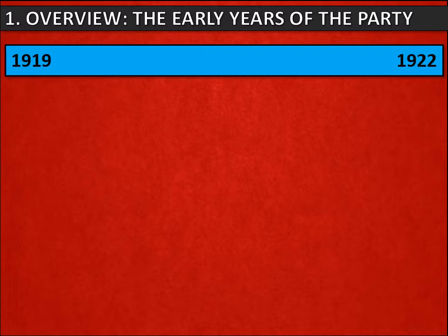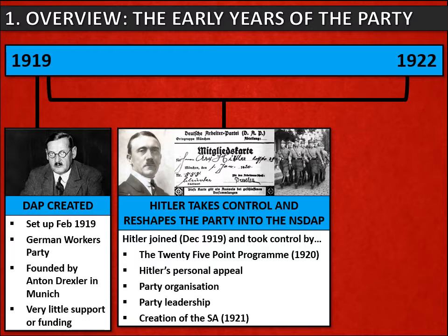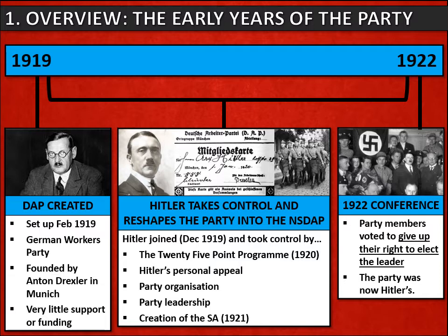The party was set up in February 1919, called the DAP or German Workers' Party, and it wasn't created by Hitler — it was founded by Anton Drexler in Bavaria, Munich. In those early days the party was almost irrelevant with very little support and funding. Hitler joined in December 1919 and then took control. We'll look at five steps: the 25-point program, Hitler's personal appeal, his reorganization of the party, his takeover of the leadership, and his creation of the SA. By 1922, party members voted to give up their right to elect the leader, making the party effectively Hitler's.